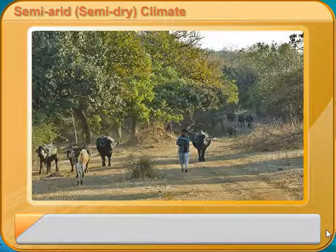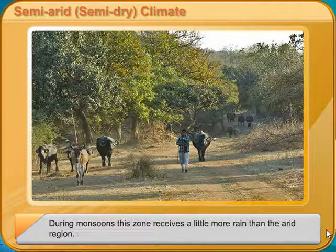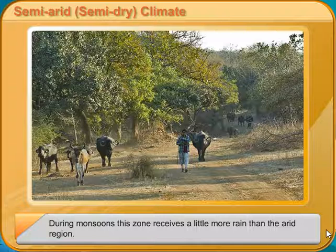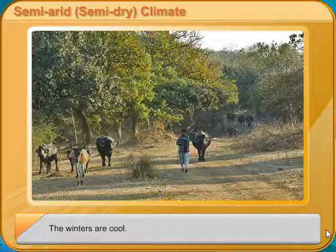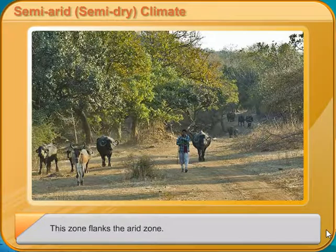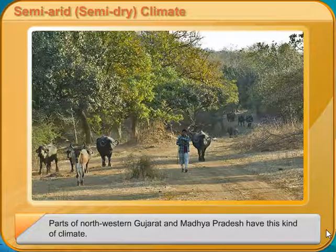Semi-Arid, Semi-Dry Climate: This zone has hot summers. During monsoons, this zone receives a little more rain than the arid region. The winters are cool. This zone flanks the arid zone. Parts of north-western Gujarat and Madhya Pradesh have this kind of climate.